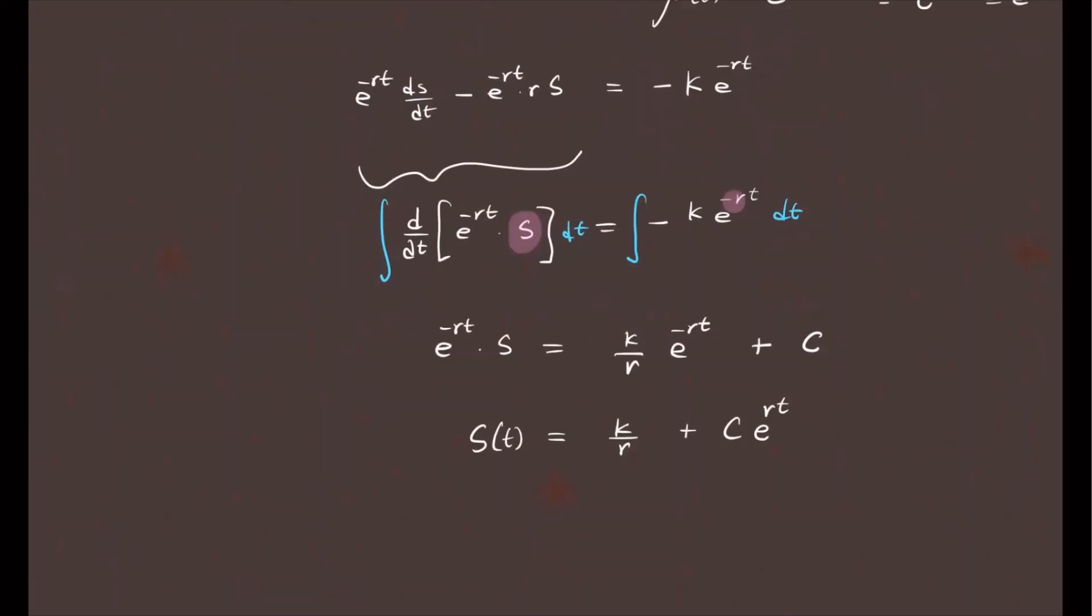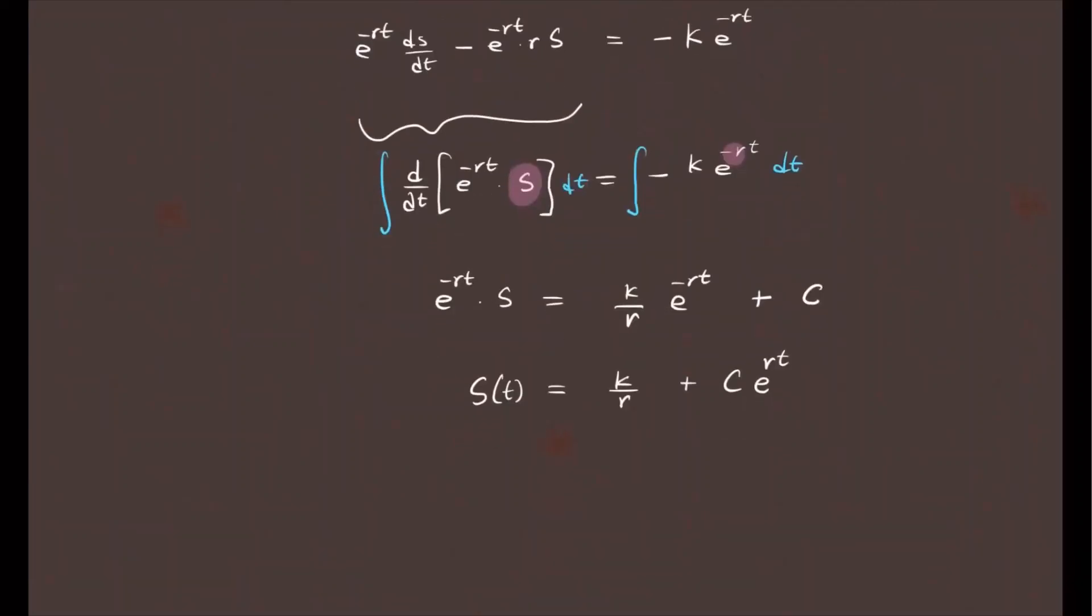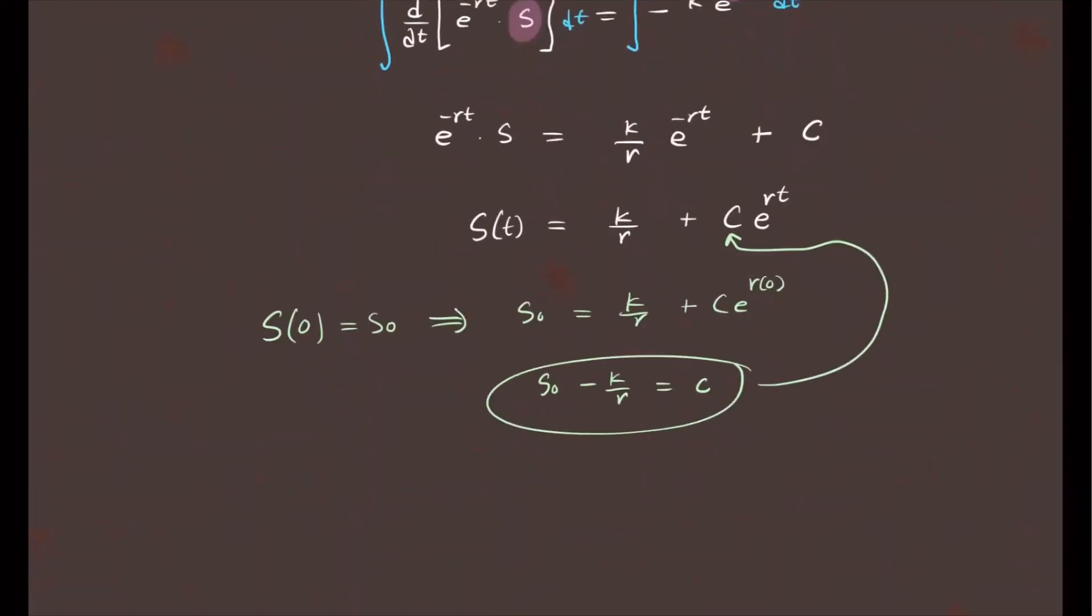Now, how do we find C? Well, we need an initial condition. For this particular example, let's suppose the initial condition is some S naught. If you plug this in for T equals 0 and S of T equals S naught, you will have S naught equals K over R plus C, e to the power of R times 0, which is to the power of 0, that's 1. So we have S naught minus K over R equals C. Now, once you plug this in here, you get your model and we're ready to answer the problem.